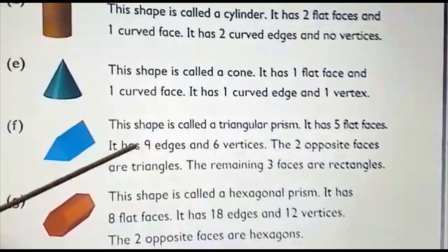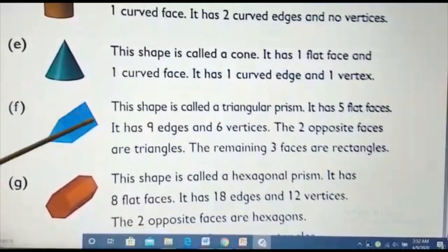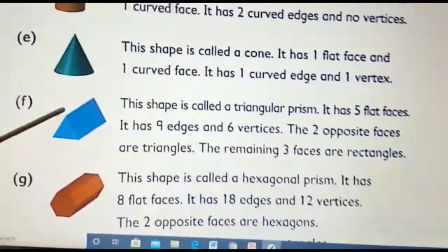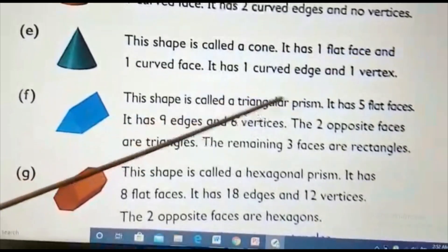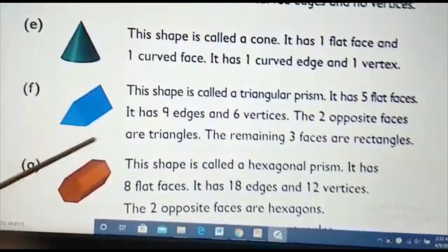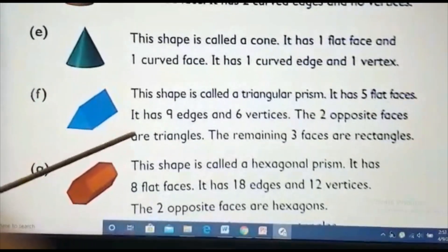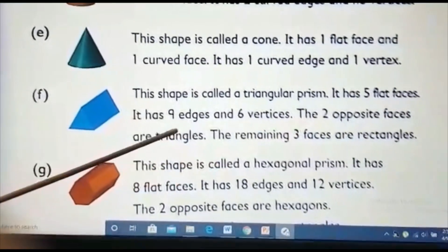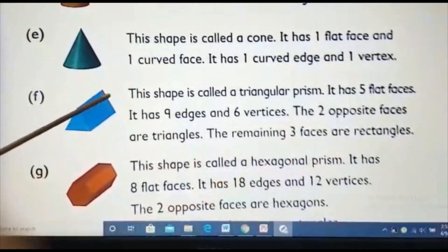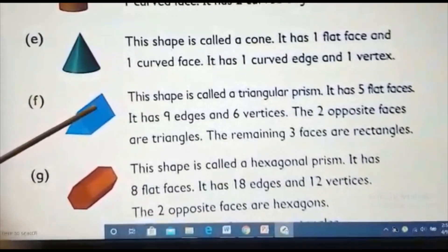The next shape has no pointed top, so it is a prism. Looking at the flat face, its shape is a triangle, so it is called a triangular prism. It has five flat faces — two opposite triangular faces and three rectangular faces.